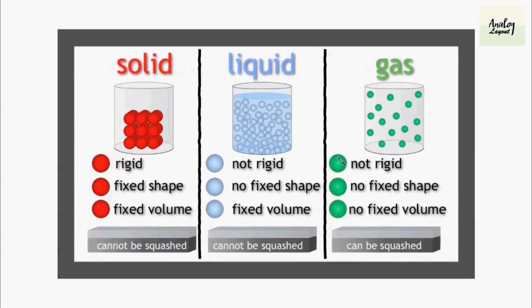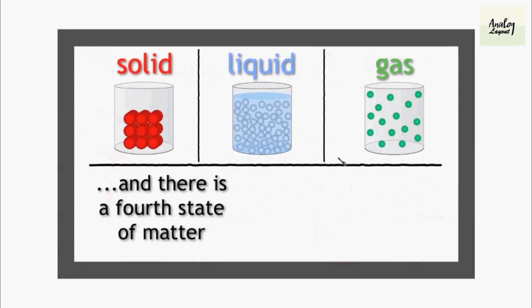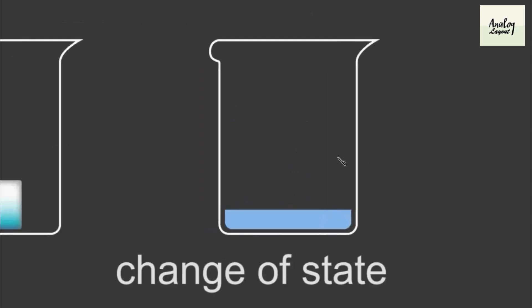As we discussed before, we have three states of matter: solid, liquid, and gas, and we have a fourth state called plasma. For example, we can take an ice cube. Ice cube has a solid form as well as liquid form. It is called change of state.